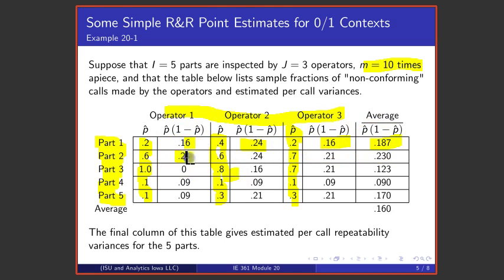For part number two, I average this, this, and that, I get that, and so on. So averaging these p-hat times one minus p-hats across operators for a given part produces the values in that column. And if I then average them, that's what we've decided to call an estimate of repeatability variance.